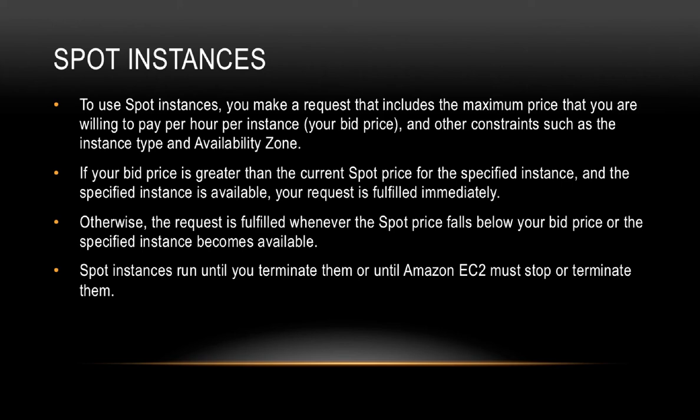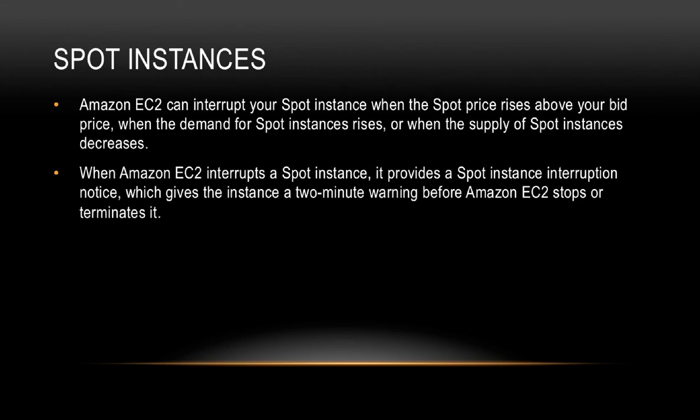You also specify constraints like the instance type and availability zone. If your bid price is greater than the current spot price, which is fixed by AWS for the specified instance, and the instance is available, your request is fulfilled immediately. Otherwise your request is fulfilled whenever the spot price falls below your bid price or the specified instance becomes available. Spot instances run until you terminate them or until Amazon EC2 must stop or terminate them. Amazon EC2 can interrupt your spot instance when the spot price rises above your bid price, when demand for spot instances rises, or when supply decreases. When Amazon EC2 interrupts a spot instance, it provides a spot instance interruption notice giving the instance a two-minute warning before it stops or terminates.